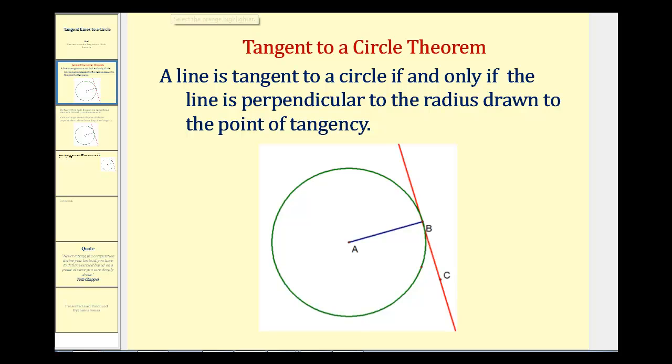In our diagram here, the tangent line is line BC and the radius is segment AB. Notice how B is the point of tangency, and this theorem states that these are perpendicular and therefore form a 90-degree angle.